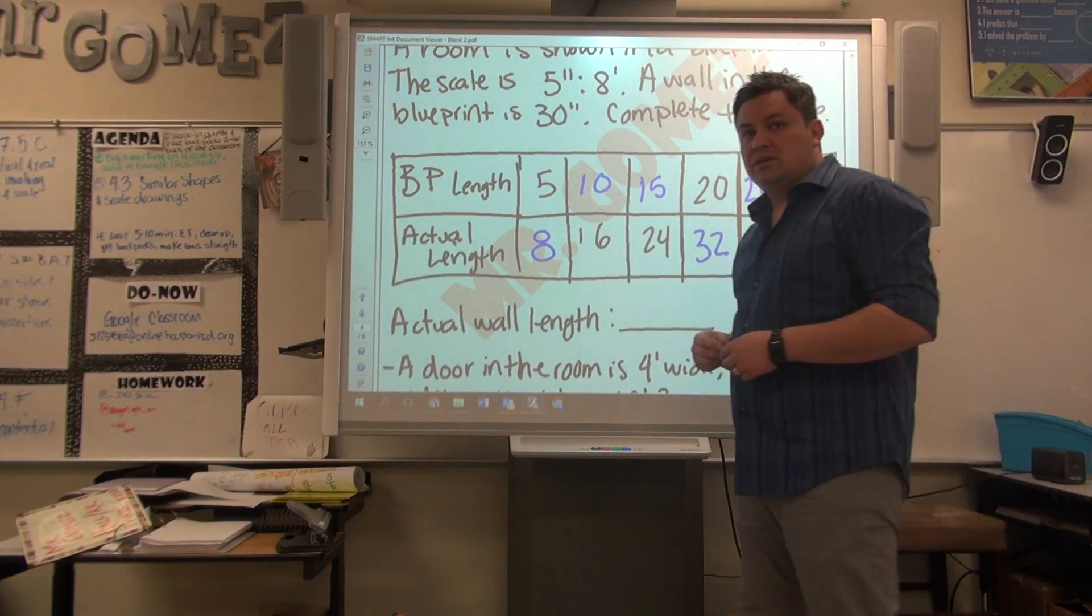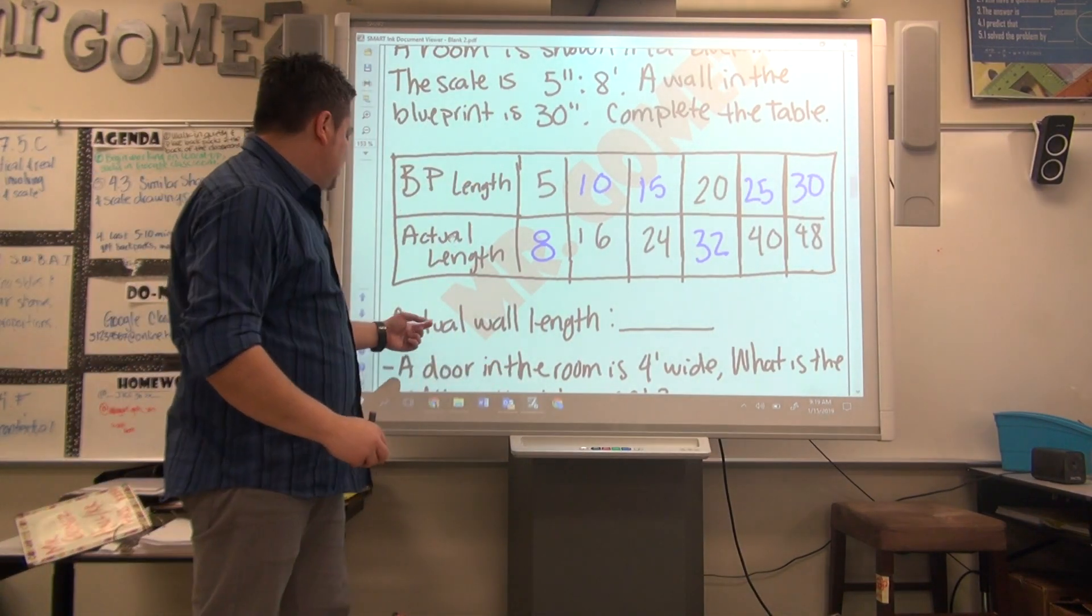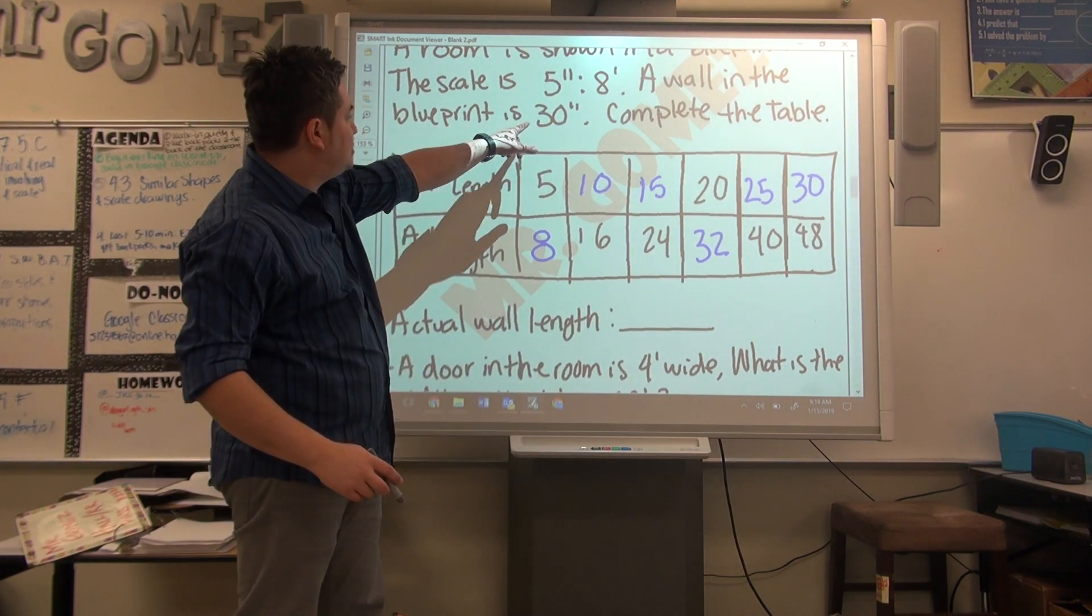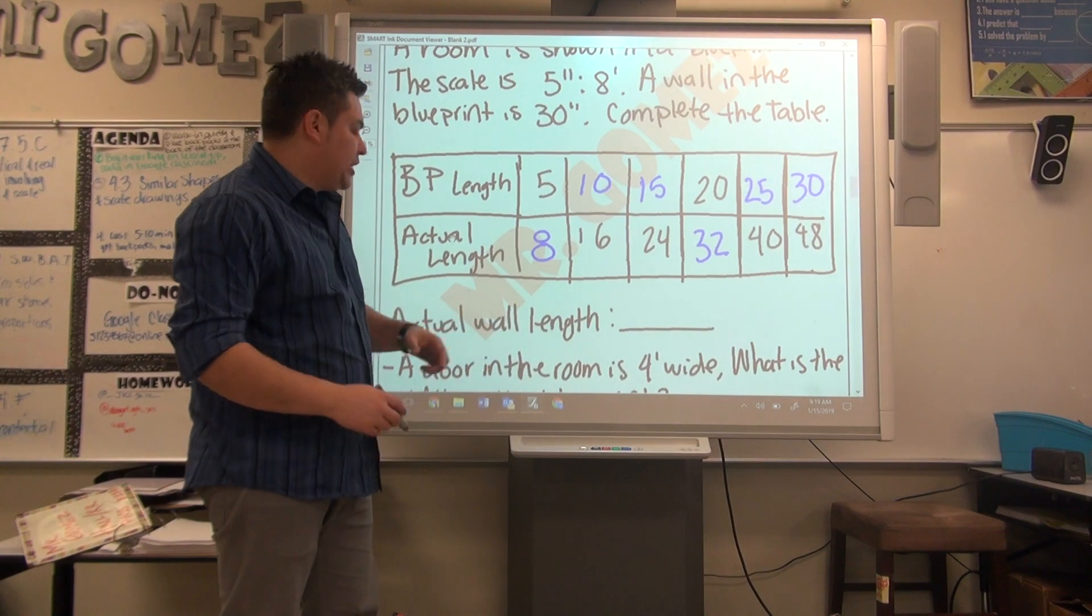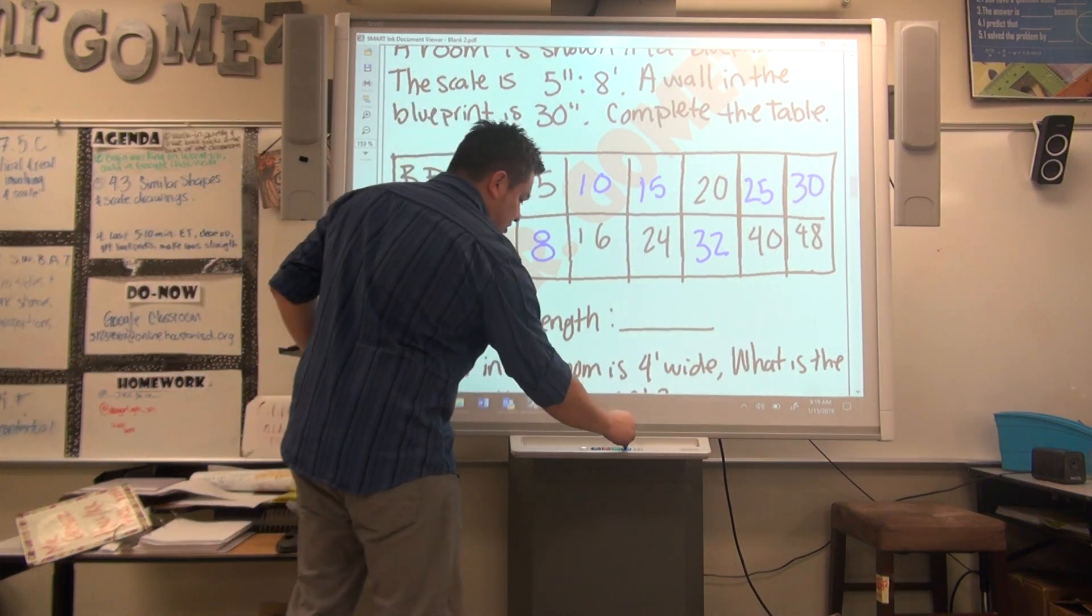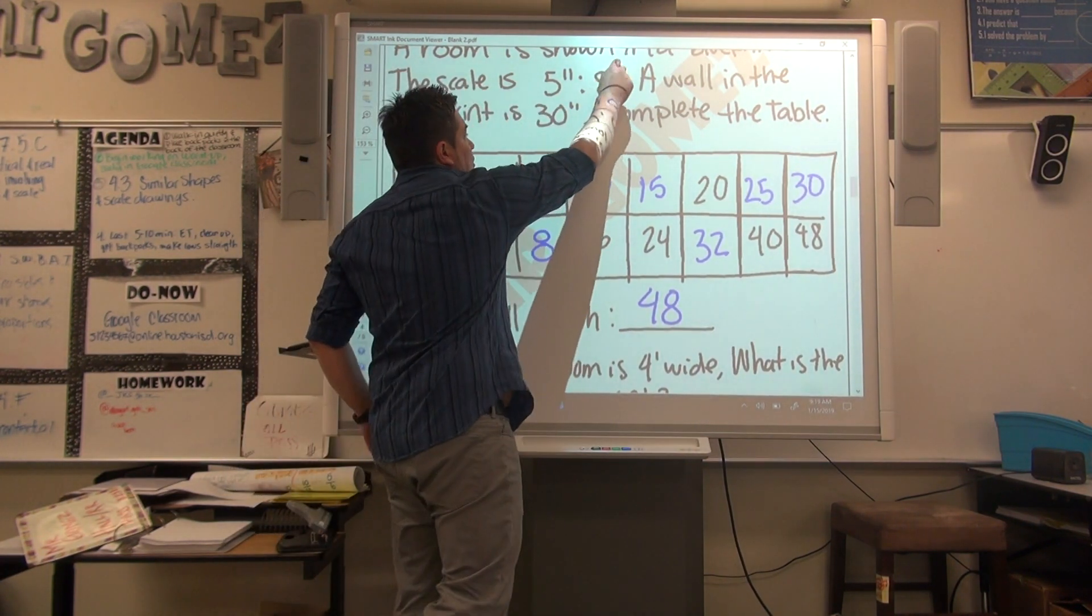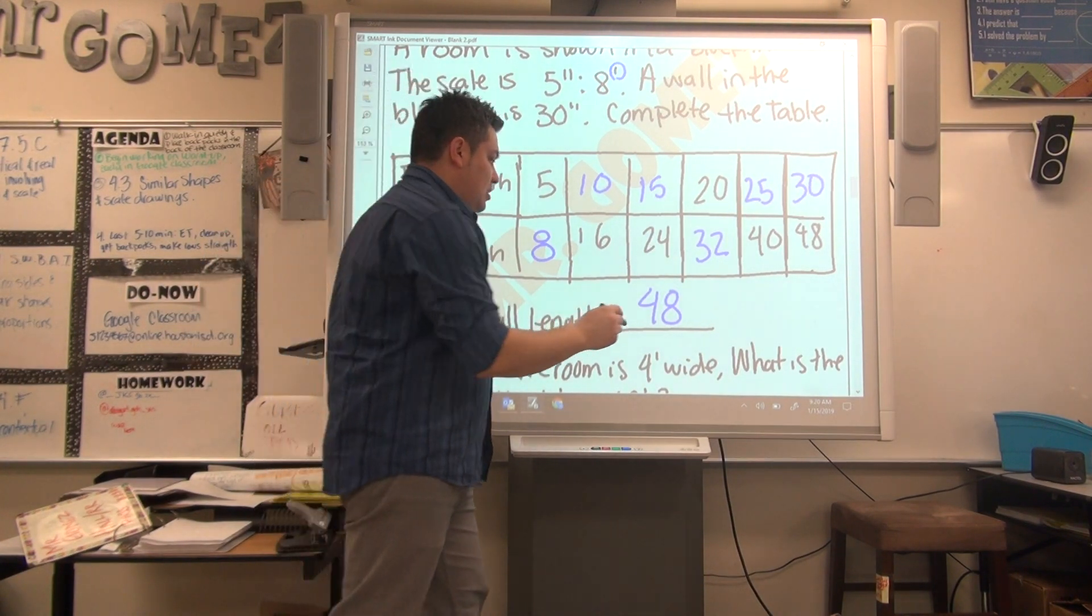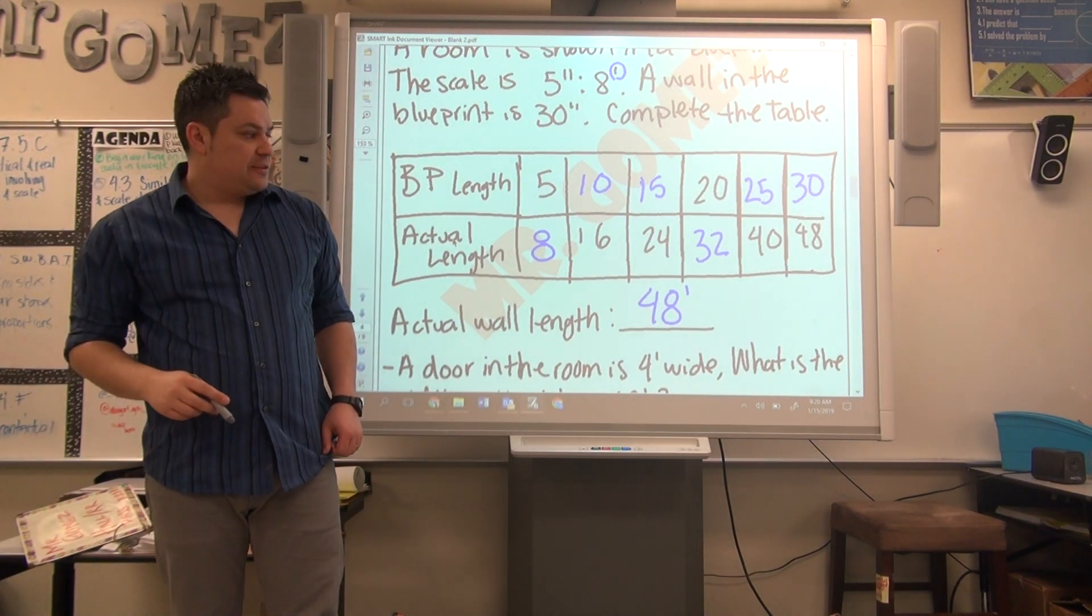See what happened? Easy, right? By doing it with the table. Now, it says what is the actual wall length? The wall length is 30 inches. So the actual wall length is 48 feet.